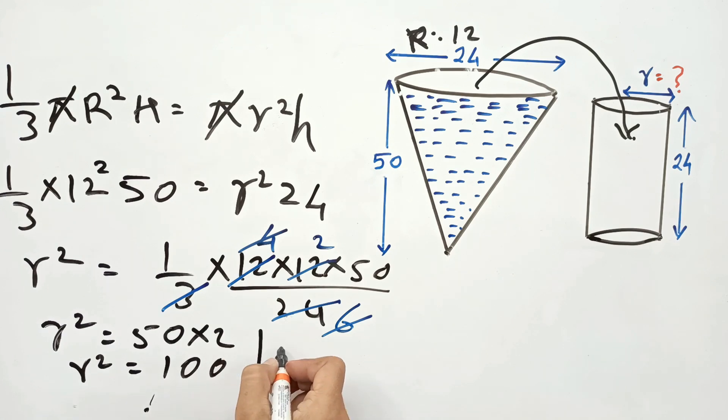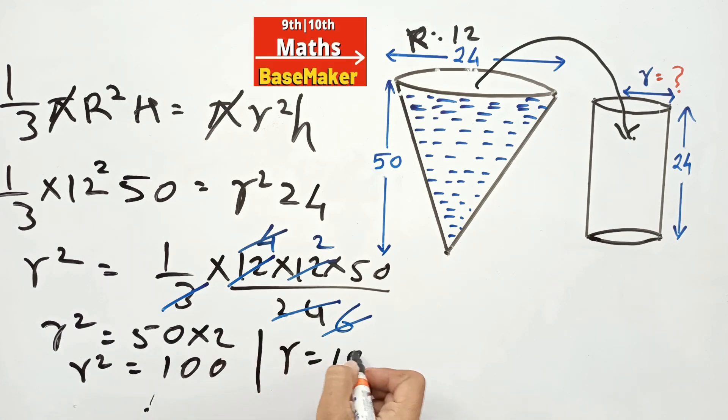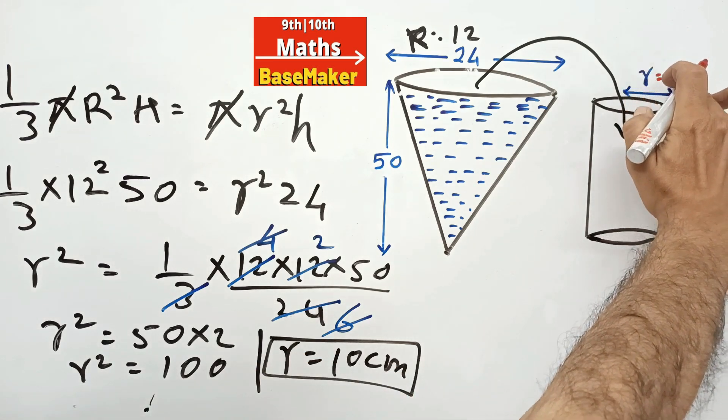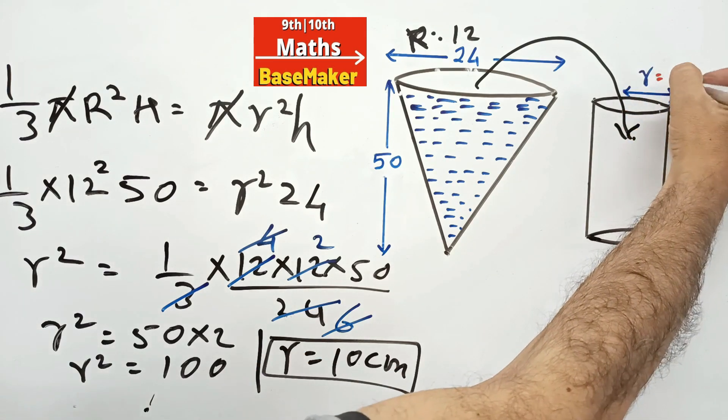r squared is 100, therefore r is 10 centimeters. So the answer we got: radius of the cylindrical vessel is 10 centimeters.